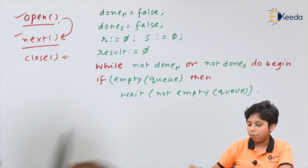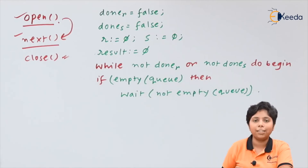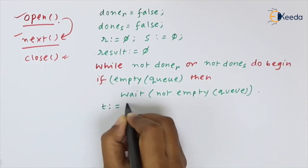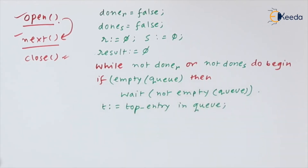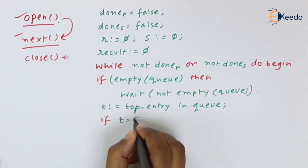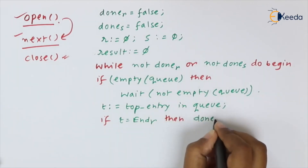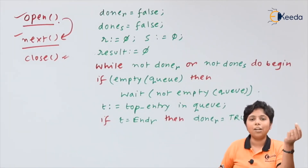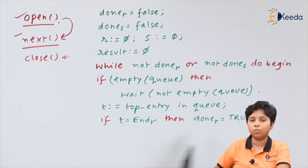Inside the loop, if the queue is empty — meaning no relational expression remains in the queue — we wait until the queue is non-empty. Then t becomes the top entry in the queue. If t equals the end marker of r (n_dot), that means we have finished with relation r, so done_r is set to true.